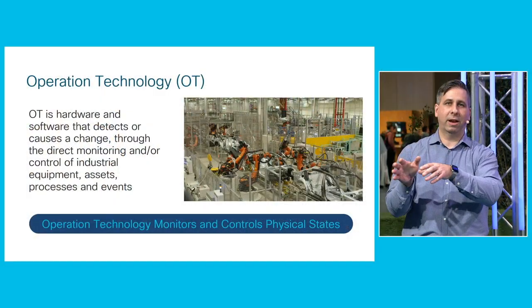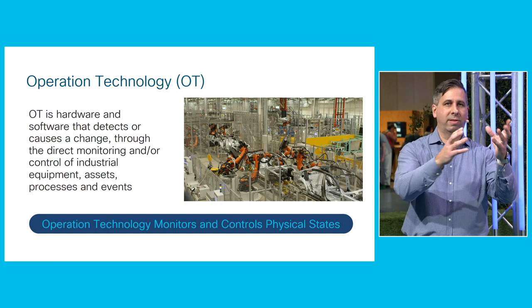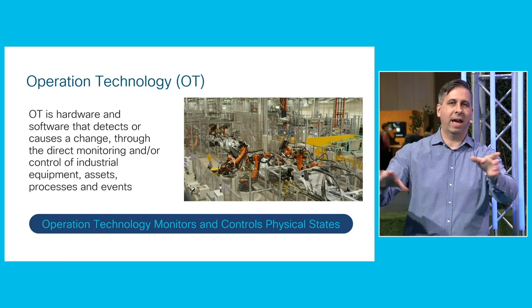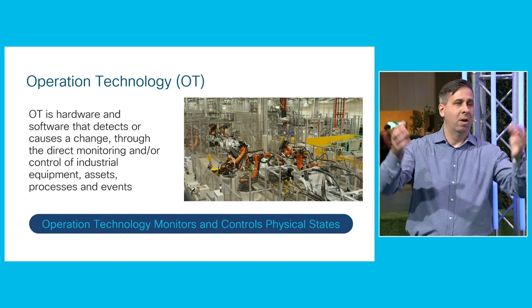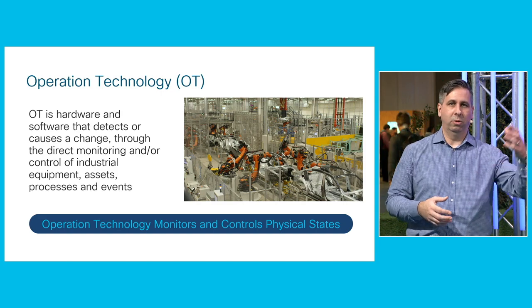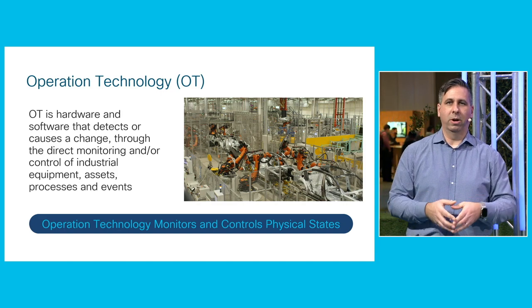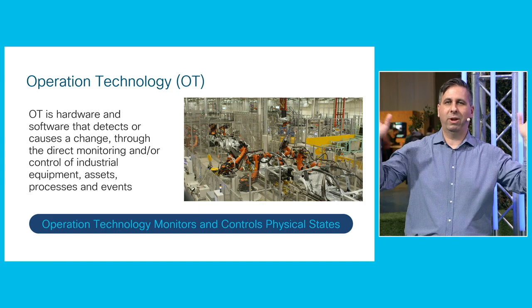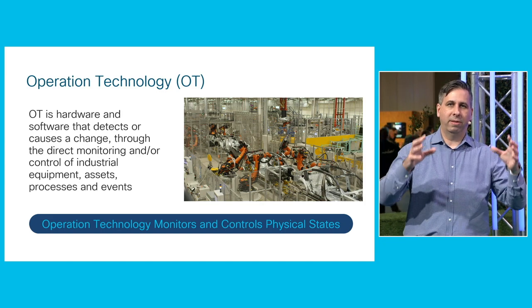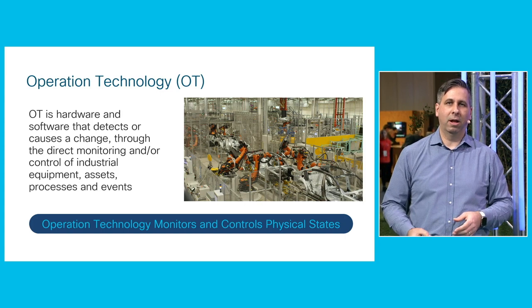In IoT environments — particularly industrial IoT — the focus is on what is called operational technology: the sensors and actuators that cause physical change. Whether that physical change is to build a car, pump oil, deliver utilities like power, or transport services, these are all the same overall type of technologies that we may not be familiar with in an IT environment.